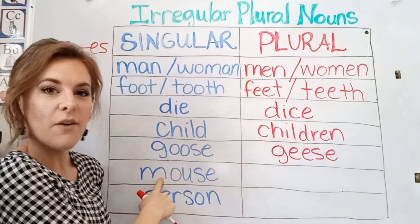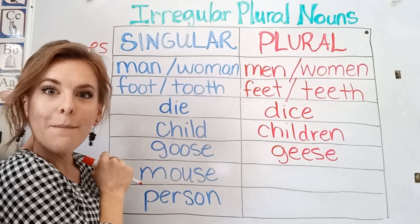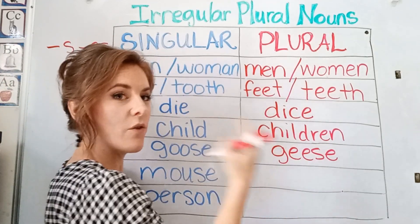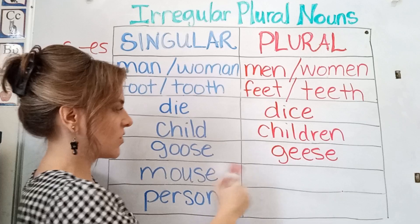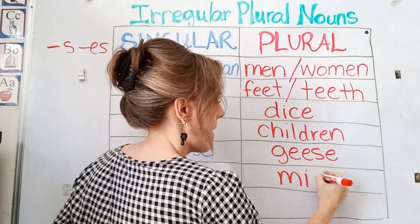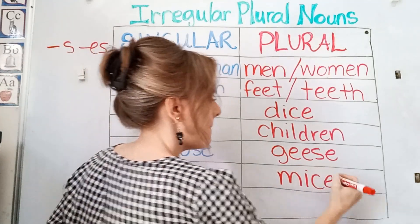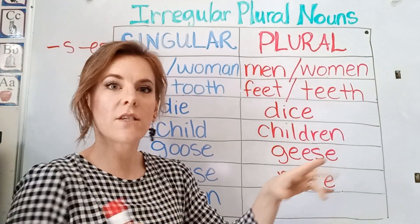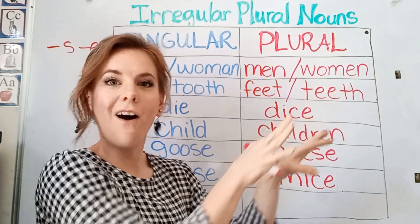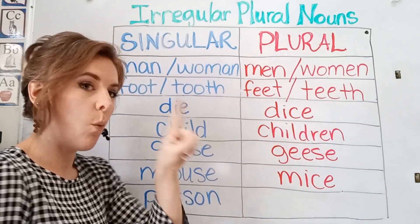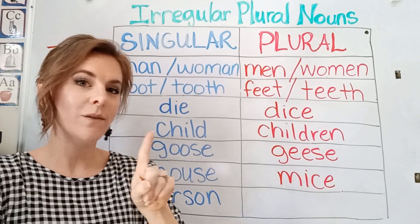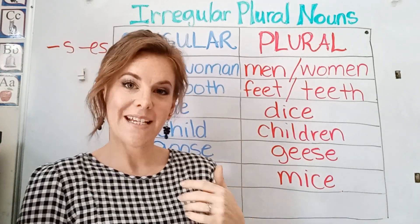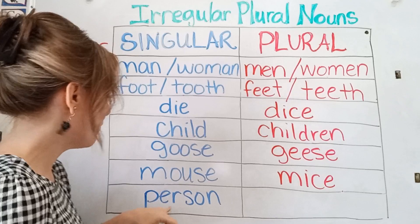And we have mouse — I saw a mouse. If we are going to have more than one, we would say mice. There were mice crawling all around. I saw one mouse; I saw five mice.